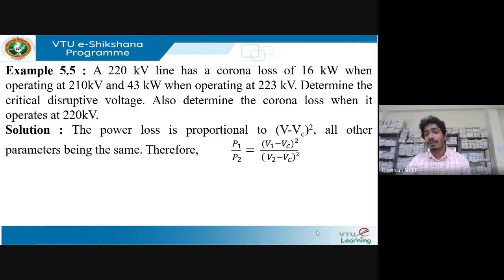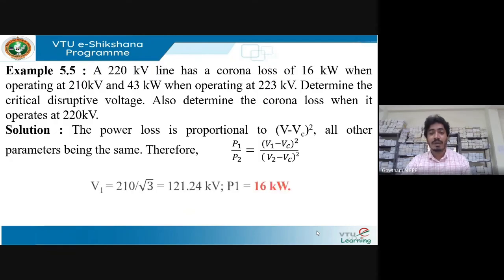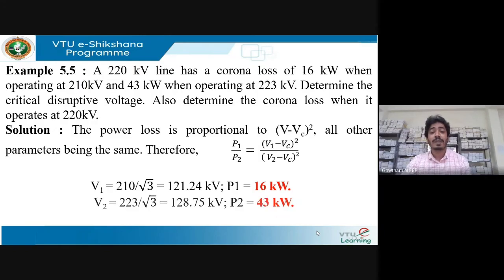Power loss is proportional to (V - V_c)², with all other parameters considered the same. So P₁ = (V₁ - V_c)² and P₂ = (V₂ - V_c)². Here V₁ = 210 kV with P₁ = 16 kW, and V₂ = 223 kV with P₂ = 43 kW. Converting to phase values by dividing by √3: V₂ = 128.75 kV per phase.